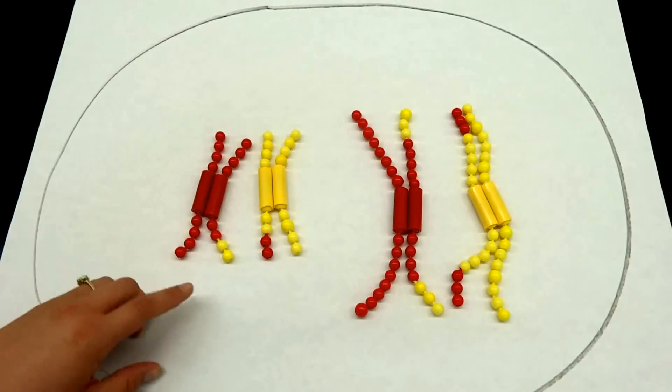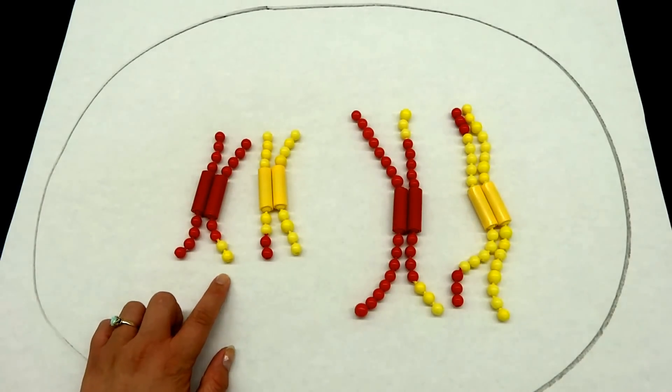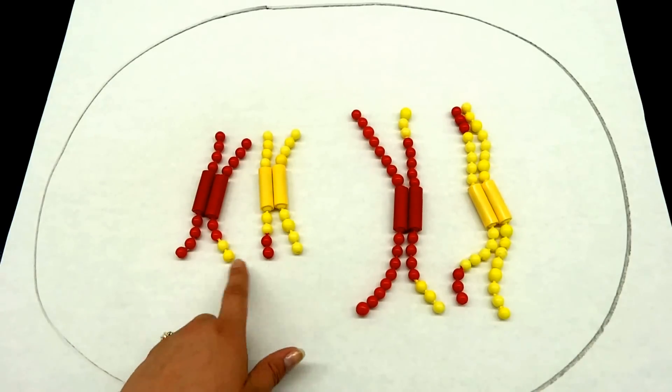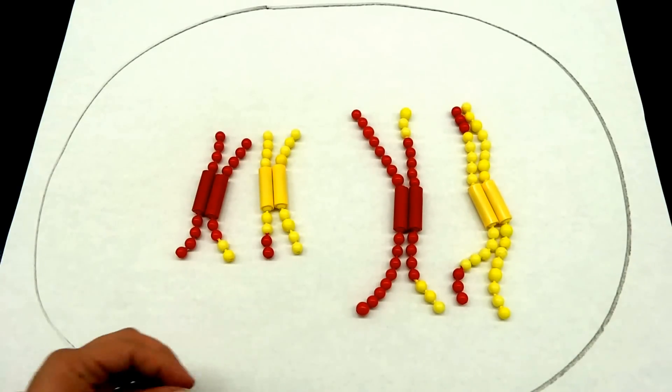Remember, reciprocal means that these are going to be the same genes. So if this chromosome is carrying eye color, so is this one, so now we've just swapped our eye color. They have to be genes coding for the same types of proteins.